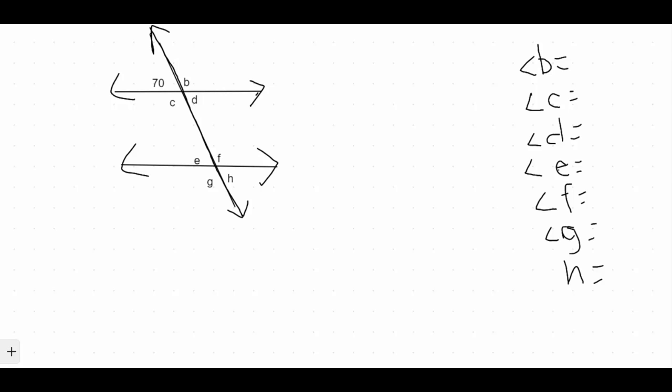A transversal is a line that cuts through two parallel lines. And when that happens, it creates some scenarios for us that we are able to use in order to find the missing angles of everything else. So what we're going to do in order to find these missing angles is we're going to use some relationships that we know about angles.